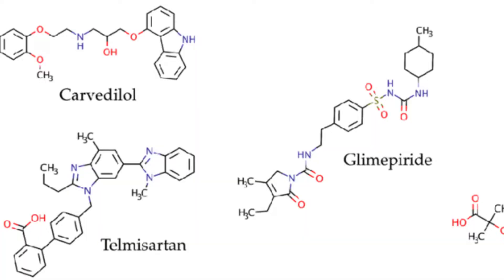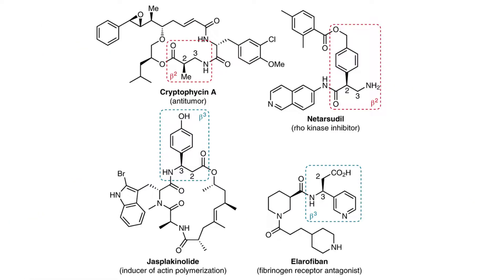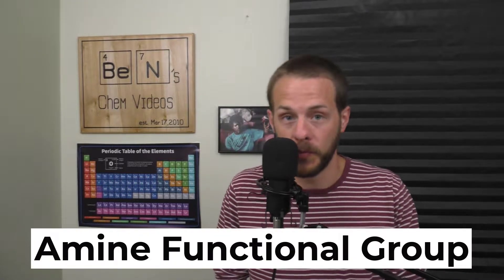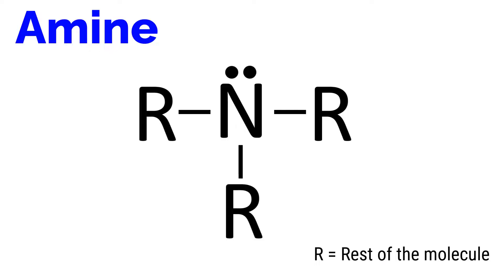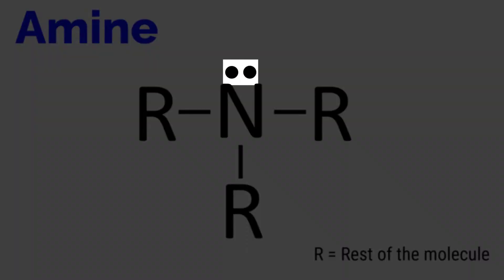APIs are very diverse in their structures, and some are much more elaborate and complicated than others. But one thing that many APIs have in common is that many APIs contain something called amine functional groups. An amine functional group, or simply an amine, consists of a nitrogen atom bonded to one, two, or three carbon atoms within a larger molecule. The nitrogen atom of an amine has a lone pair of electrons, which is a very electron-rich, partially negatively charged environment that tends to attract positive charge.